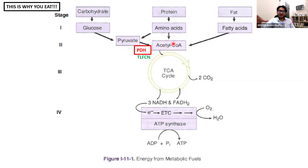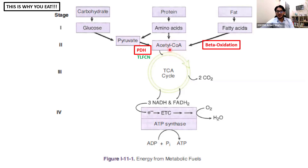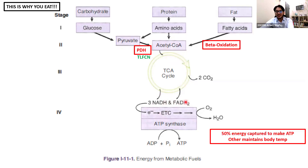They go through a process of beta-oxidation to form acetyl-CoA. So all of the macronutrients that you eat get funneled into acetyl-CoA, and eventually that acetyl-CoA goes into the Krebs cycle or the TCA cycle, then to generate electron carriers, then they're made into ATP. Half of the energy you use is used to make ATP; the other half maintains body temperature — it's lost as heat.